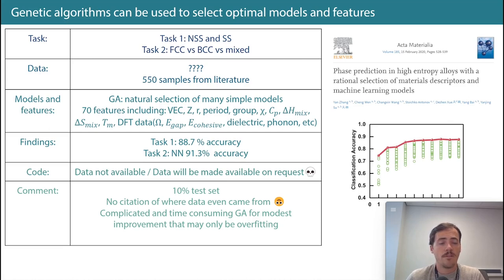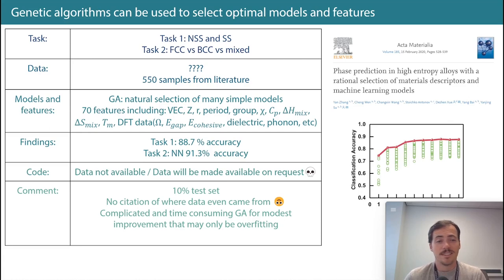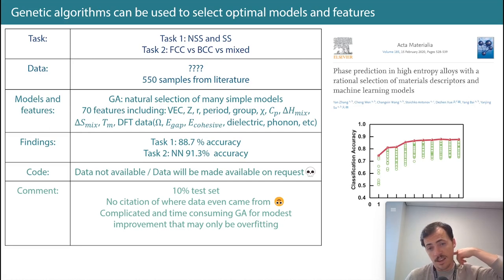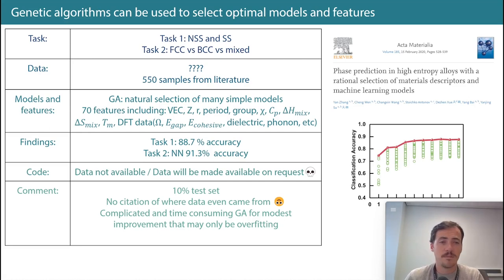In terms of data, they found 550 samples from the literature but didn't say where they came from — no cited papers, nothing. So they have data of unknown origin. They obviously don't provide the data, and they say it will be made available on request, which is not adhering to FAIR data policies. But the field is getting better, even if it's not there yet.